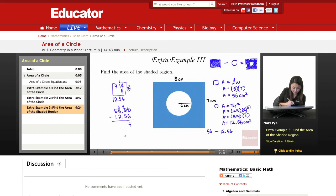9 minus 5 is 4. 5 minus 2 is 3. 5 minus 1 is 4. So it's 43.44. So this is 43.44 centimeters squared is my answer.